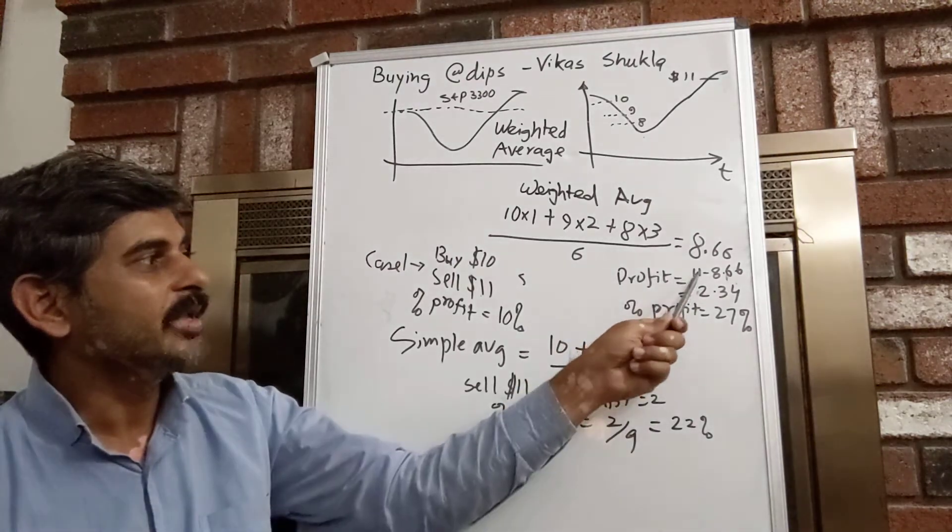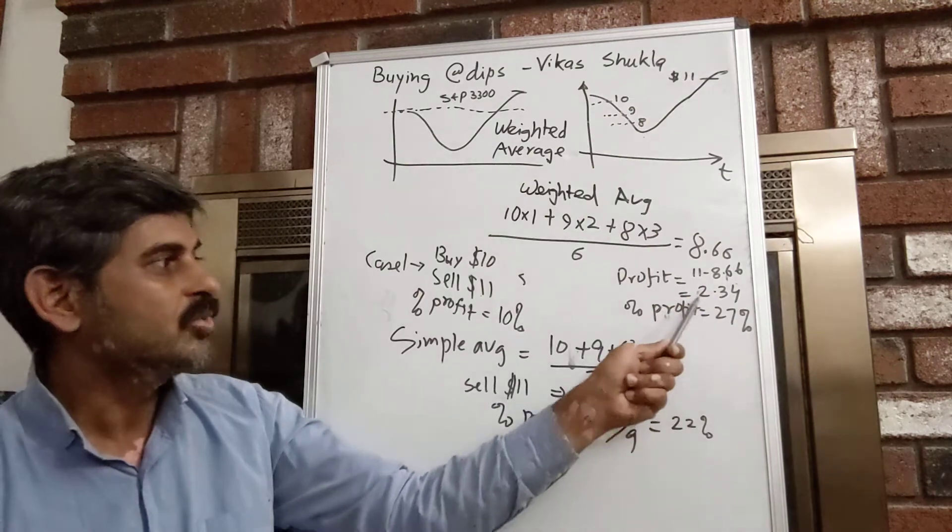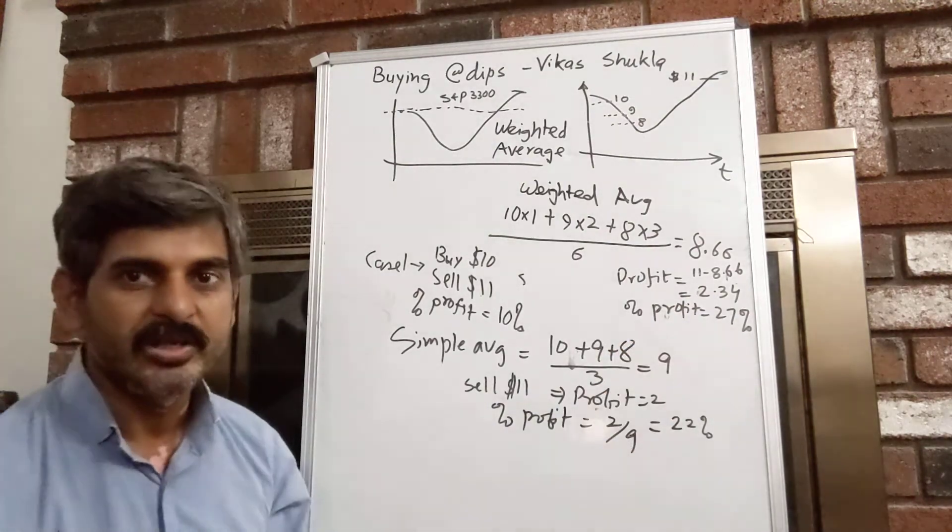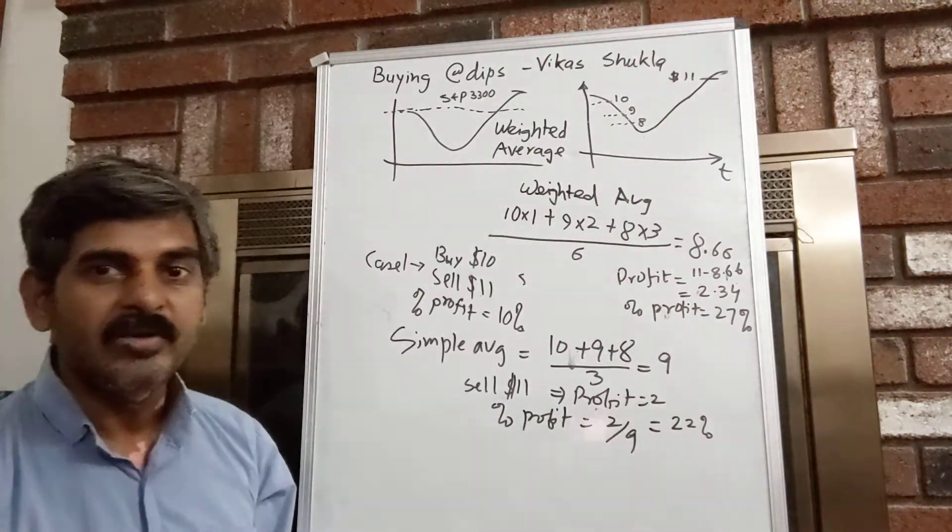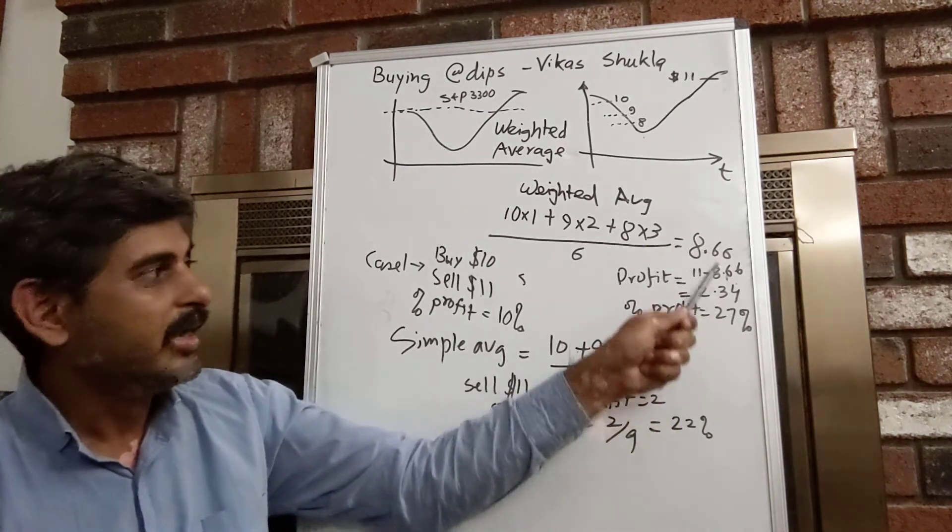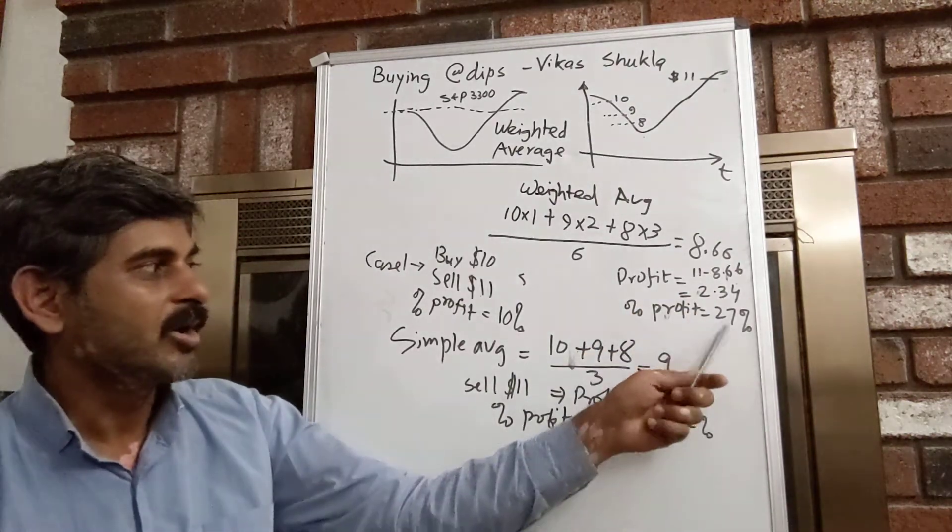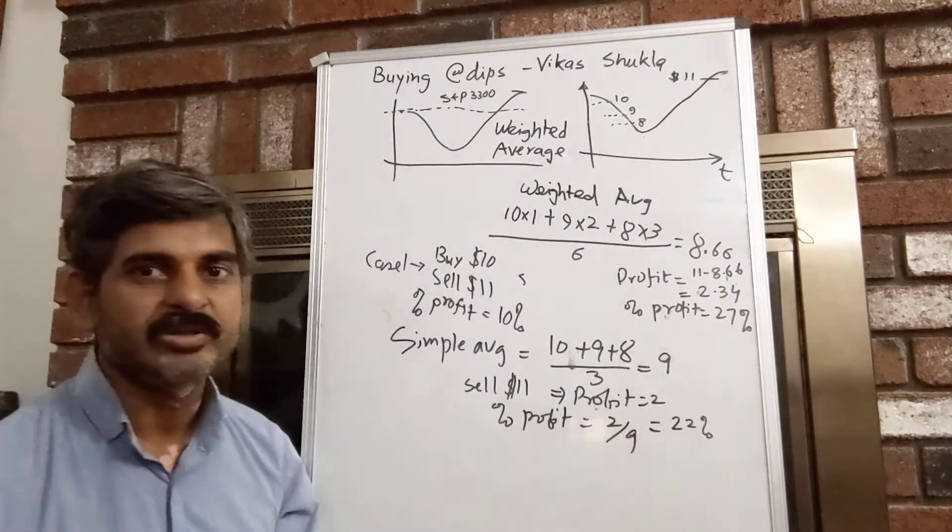And if you sell all your stock at that price point, then your profit is going to be 11 minus 8.66 which is $2.34 for each stock. In terms of percentage profit, that will be 2.34 divided by 8.36 multiplied by 100 or you are looking at 27% of the profit.